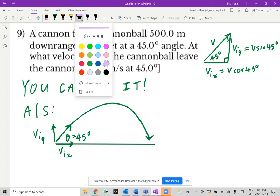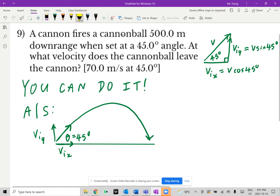And downrange simply means the horizontal displacement. So this measurement is also known as downrange. So I'm just going to write that down. Now, it's asking you at what velocity does the cannonball leave the cannon, so you're looking for V.